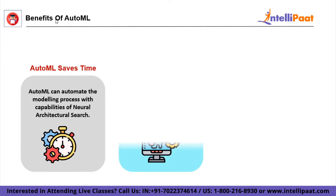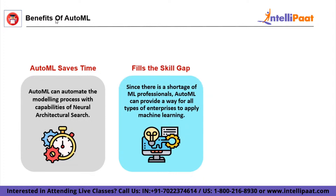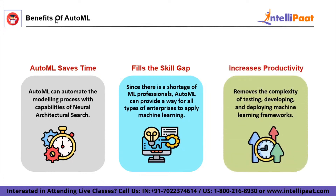Another benefit is that AutoML fills the skill gap. Today, every business is very aware of the latest AI and digital trends to compete on a large scale. But companies usually struggle to find the right talent — there is an increasing demand for ML engineers and data scientists that businesses are unable to meet. AutoML can work to bridge the shortage of skilled people in an organization. The third benefit is an increase in productivity. Automated machine learning simplifies processes by applying ML to real-world problems, reducing the complexity of testing, developing, and deploying machine learning frameworks, which results in increased productivity.